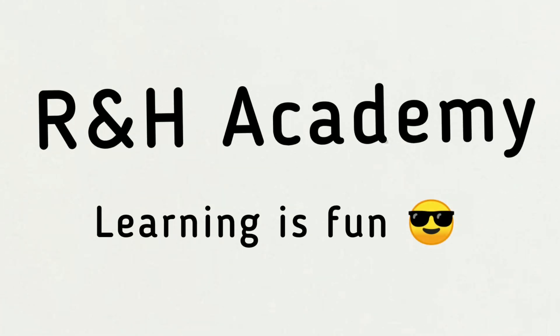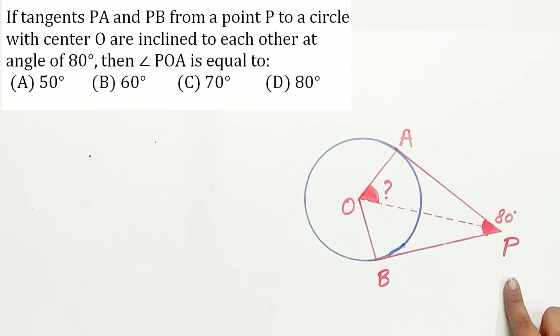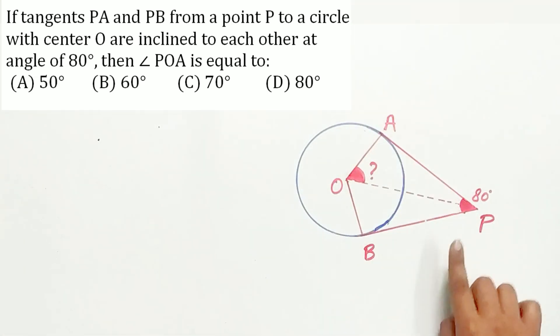Welcome to RNH Academy channel. Question 3 of exercise 10.2 says, if tangents PA and PB from a point P to a circle with center O are inclined to each other at an angle of 80 degree, then angle POA is equal to?